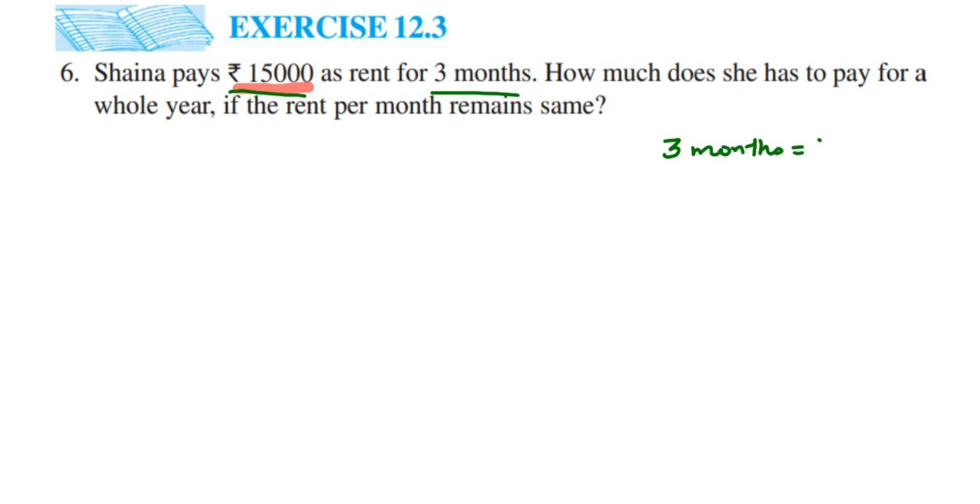So here they have given three months for rupees 15,000. We want to find out for one month. So whatever number you have here transposes. This transpose method you have learned in your lower classes or maybe in sixth class - when you send a number from multiplication to the other side, it goes to division.